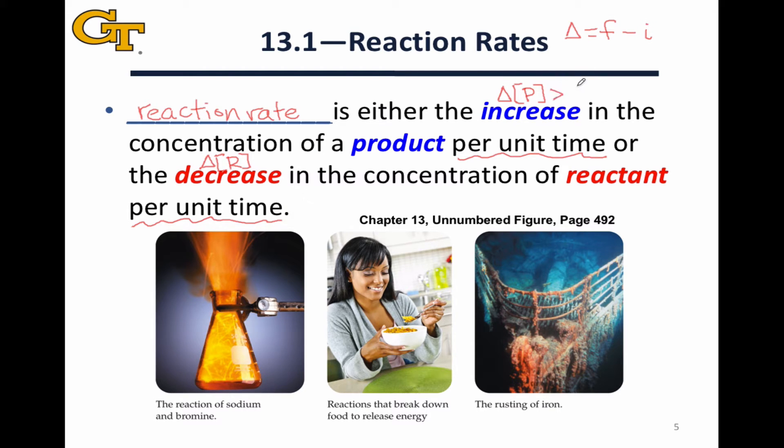Delta P is going to be greater than zero since the products will be forming as the reaction occurs, and delta R will be less than zero as the reactants are consumed. Per unit time means we're going to divide by some time interval delta t. Delta t will be the difference between some final time and some initial time.